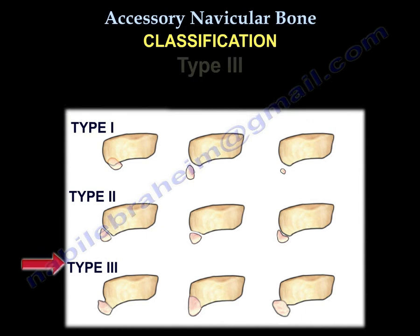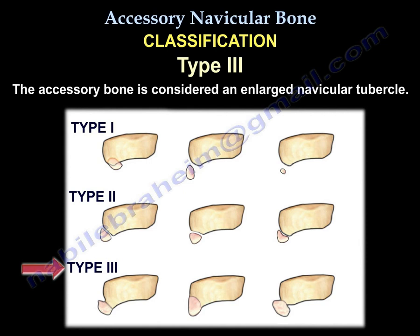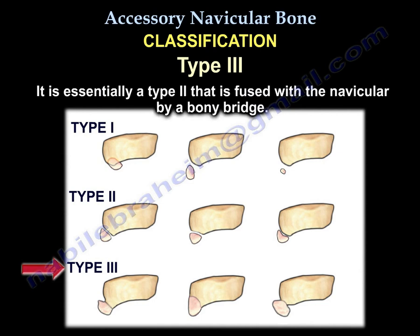In a type 3, the accessory bone is considered an enlarged navicular tubercle. It is essentially a type 2 that is fused with the navicular by a bony bridge.